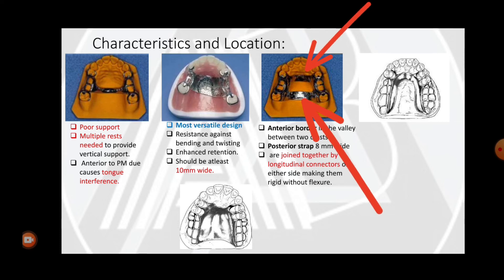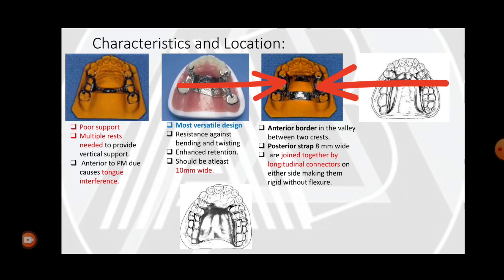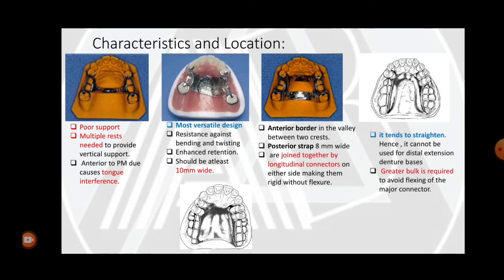The closed horseshoe type has two components: an anterior component that lies between the rugae, and a posterior component that ends at the anterior vibrating line of the hard palate and should be at least 8 millimeters wide. Both components are joined by longitudinal connectors, which provide rigidity to the framework.